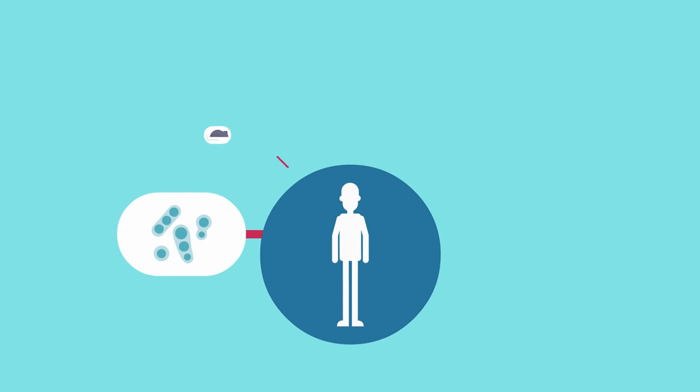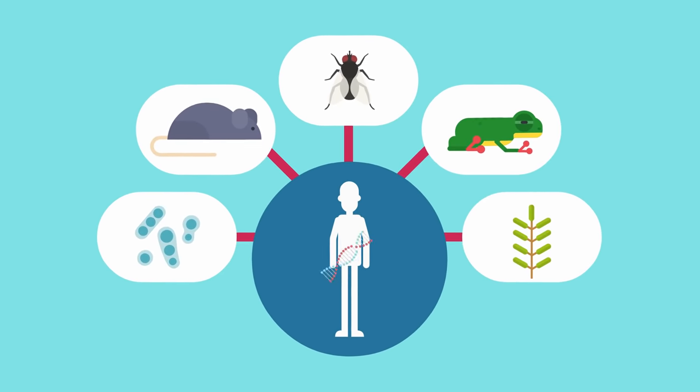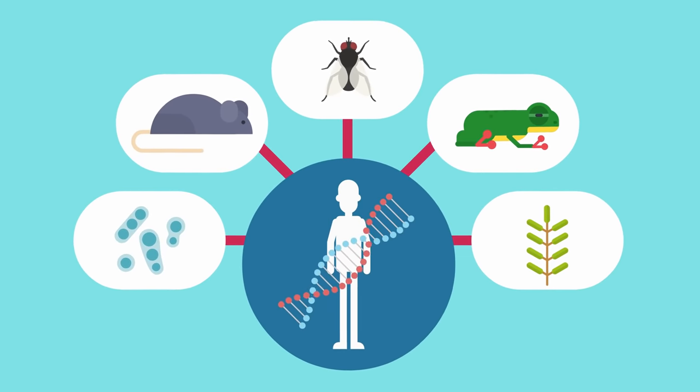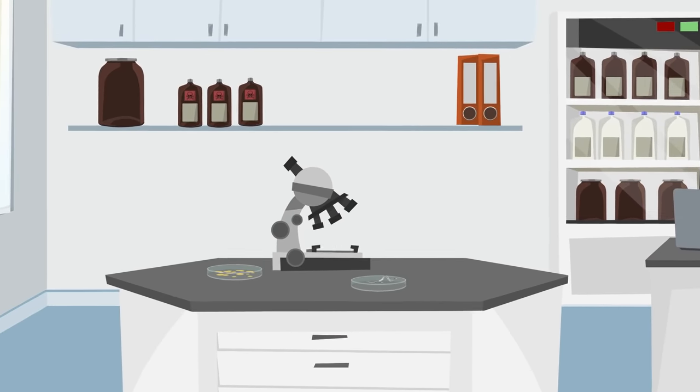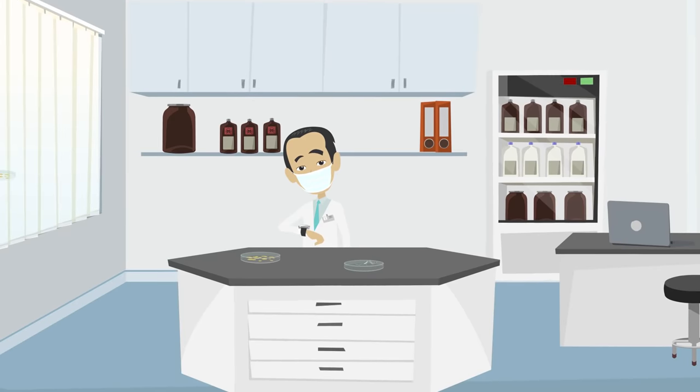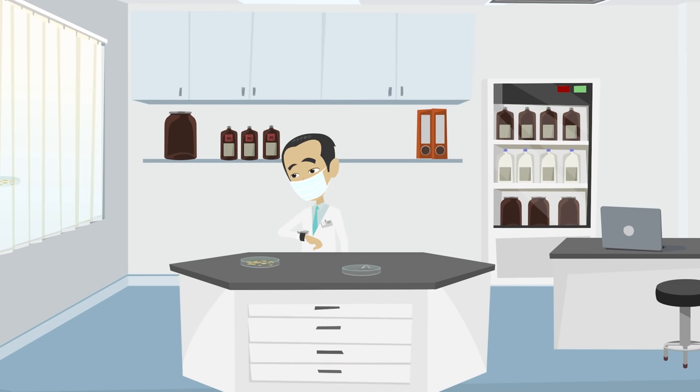Model organisms are non-human species that scientists can study to increase their understanding of biological processes shared with humans. C. elegans has several features that make it a powerful model organism for geneticists like Dr. Anderson. It's easy to grow in a lab. It has a life cycle of only three and a half days. It can be stored frozen and then brought back to life.